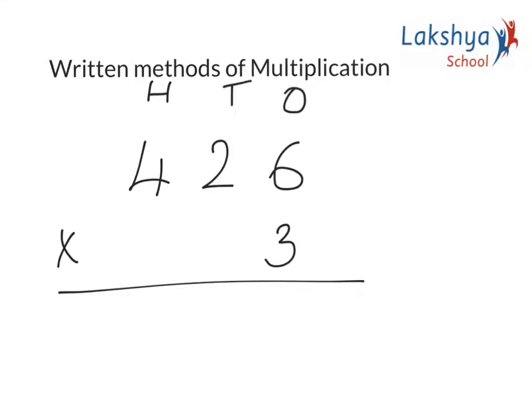Let's learn one more method of multiplication according to its place value, written vertically. So the number is 426 × 3. Step 1 is we need to multiply 3 with ones, then 3 with tens, and then 3 with hundreds. Let's work it out.